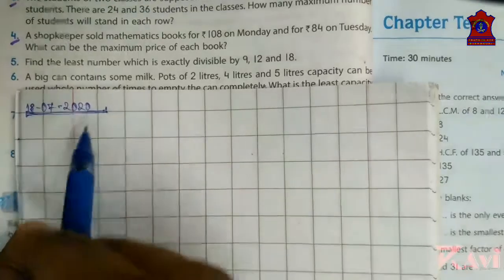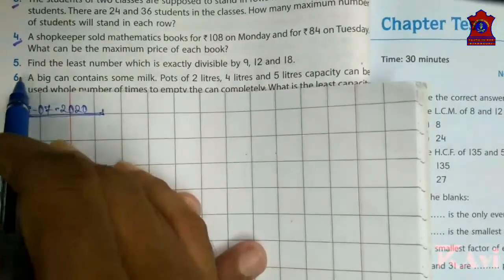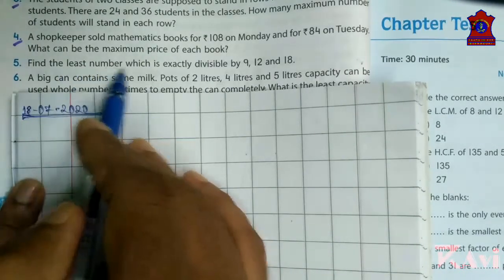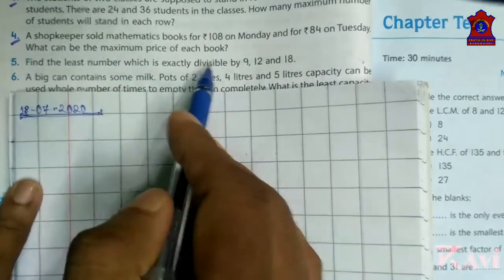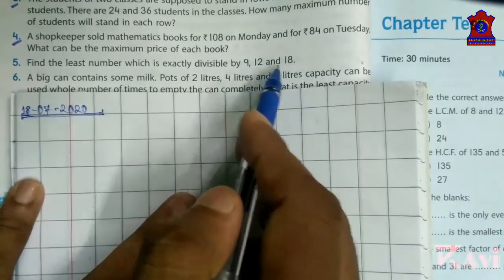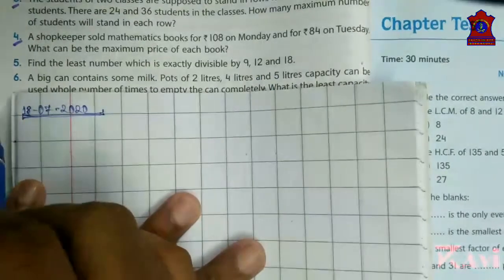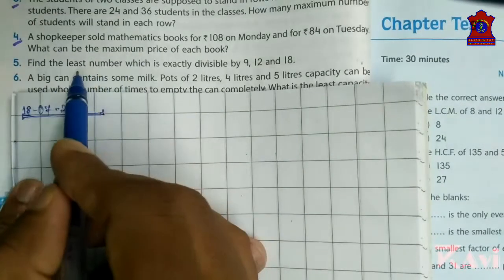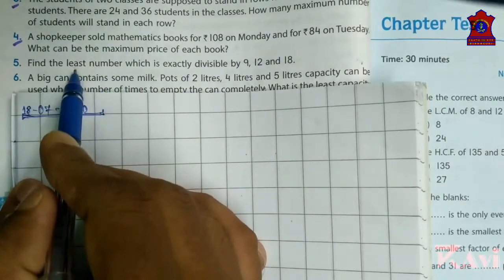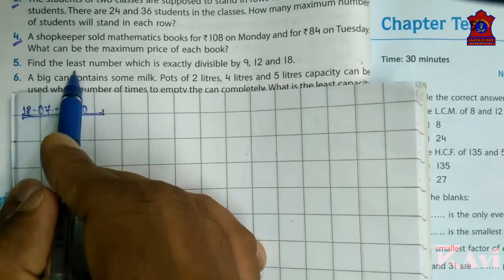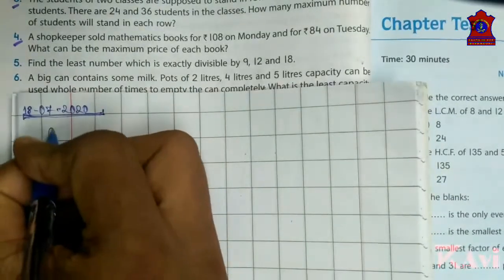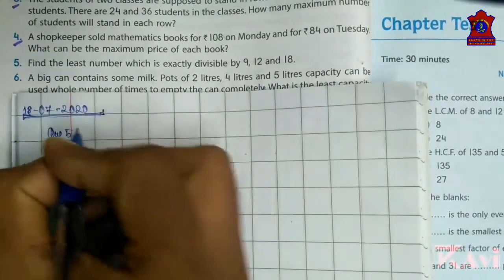What is there in question number 5? Find the least number which is exactly divisible by 9, 12 and 18. Yesterday I told you what to do if you find least. If it is written least, what to do? You need to find LCM. We are going to start with question number 5.